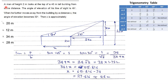A man of height 2 meters looks at the top of a 40-meter building from some distance and the angle of elevation of his line of sight is 45 degrees. When he further moves away from the building by a distance of x, the angle of elevation becomes 30 degrees. We have to find out the value of x.